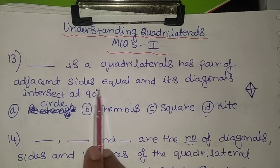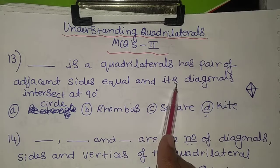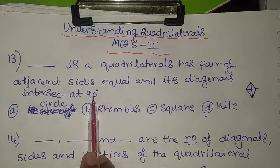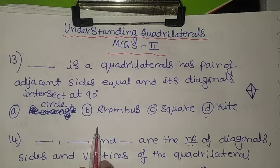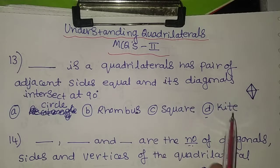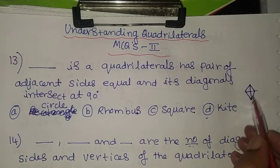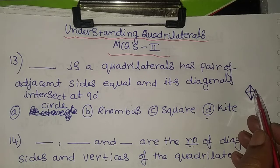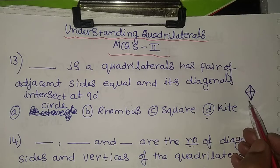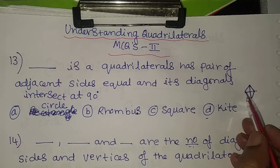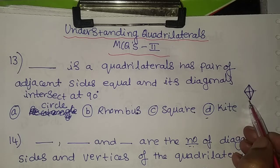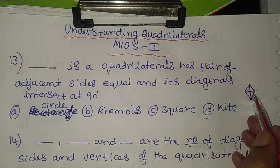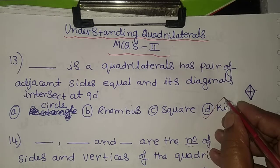The 13th problem: a quadrilateral has a pair of adjacent sides equal and its diagonals intersect at 90 degrees. Four options are given: circle, rhombus, square, and kite. The answer is kite. In a kite, two pairs of adjacent sides are equal and the diagonals intersect at 90 degrees. So option D is the correct answer.